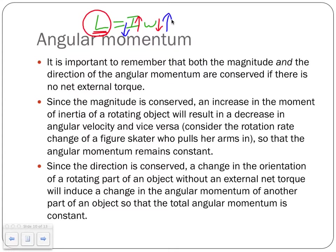You can try this yourself: hold hand weights in a spinning chair with arms extended, then pull them in — you spin faster. Extend them again and you slow down. This demonstrates conservation of angular momentum: no net torque means angular momentum stays constant, so decreasing moment of inertia increases angular velocity.